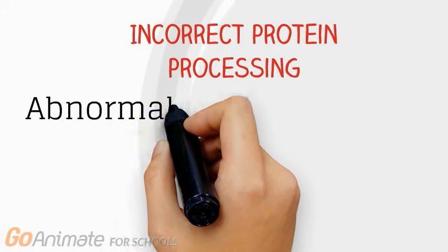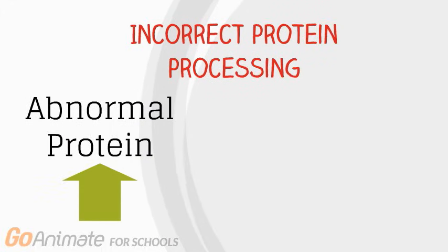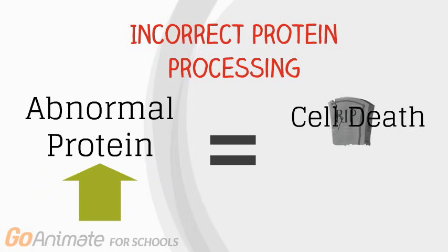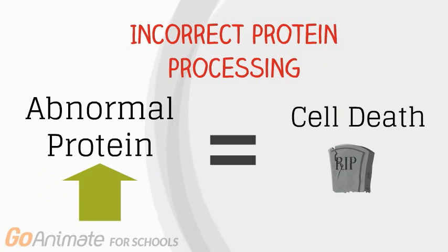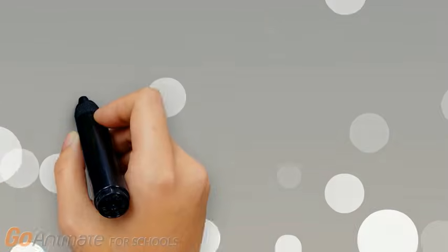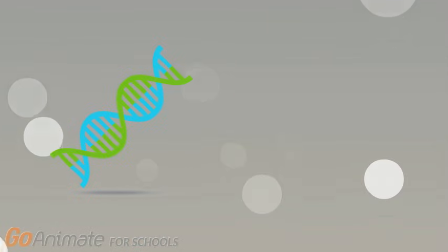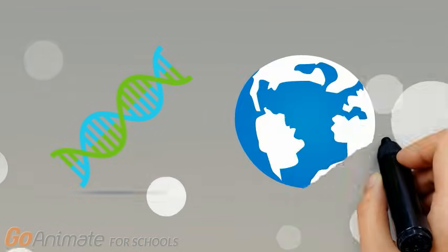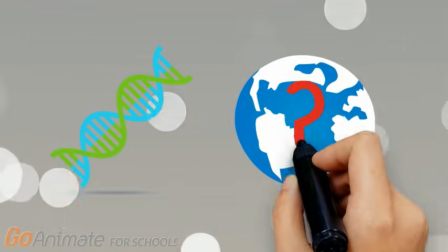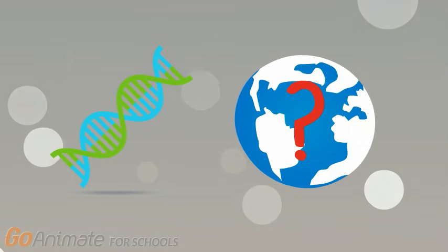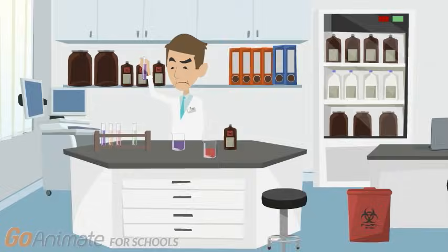ALS can also be a result of incorrect protein processing by nerve cells, meaning that abnormal protein accumulates in the body and contributes to cell death. While there are multiple genetic causes of ALS that are supported by scientific research, the environmental causes are not as well understood.